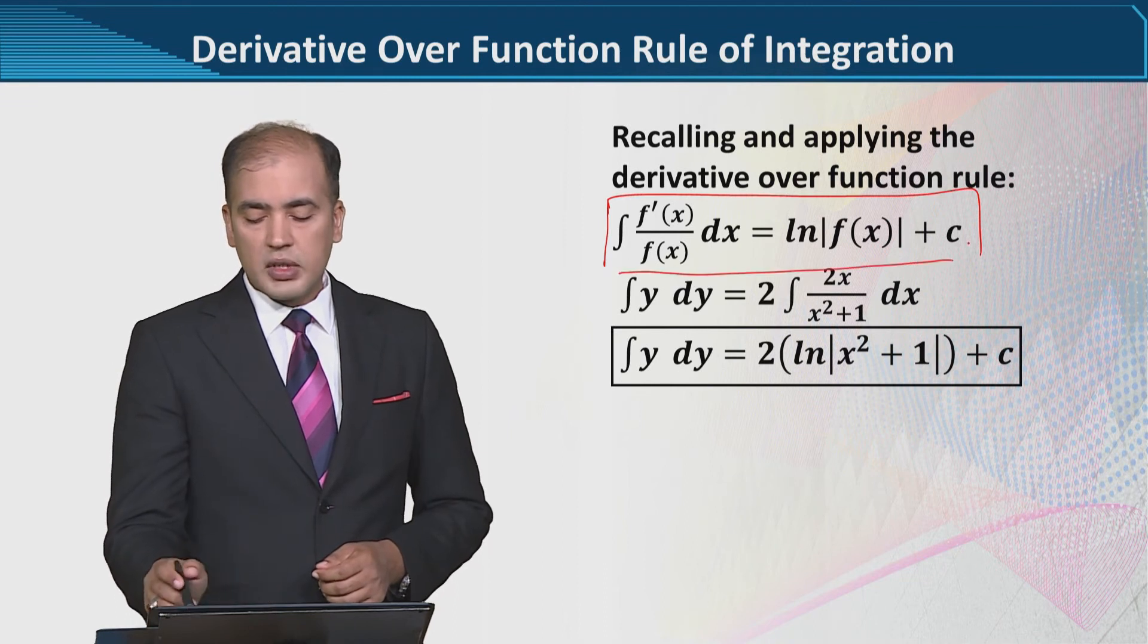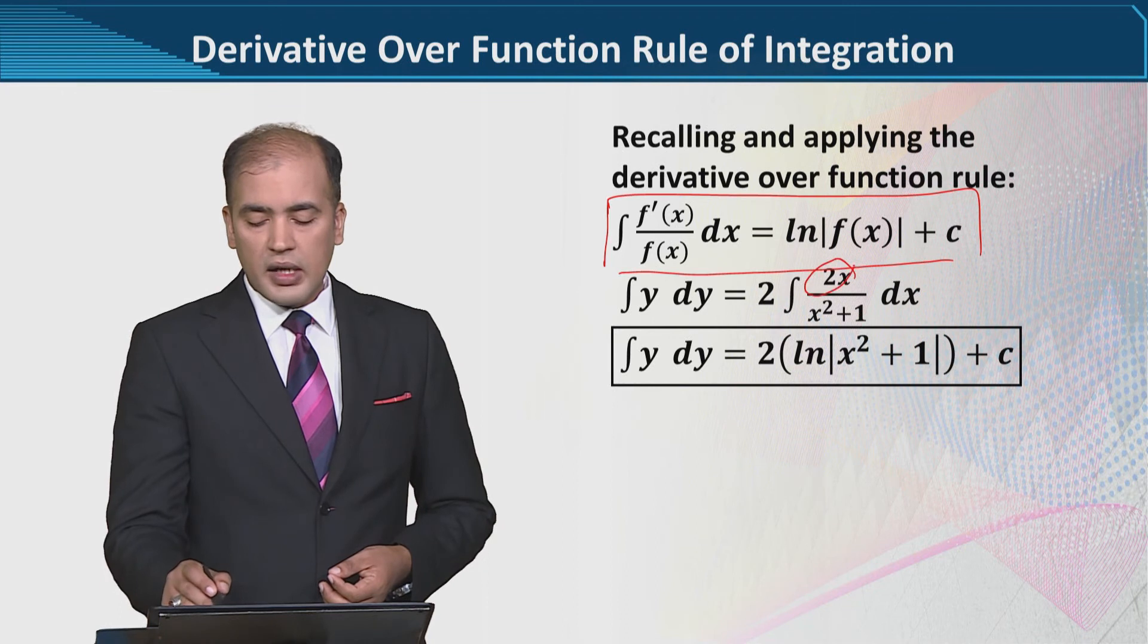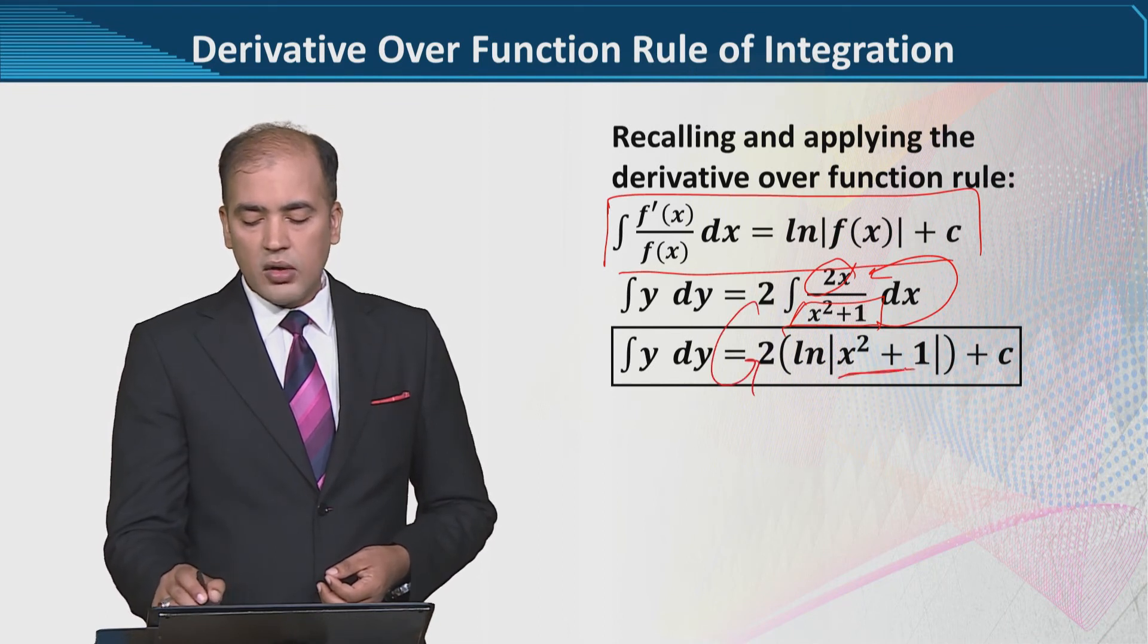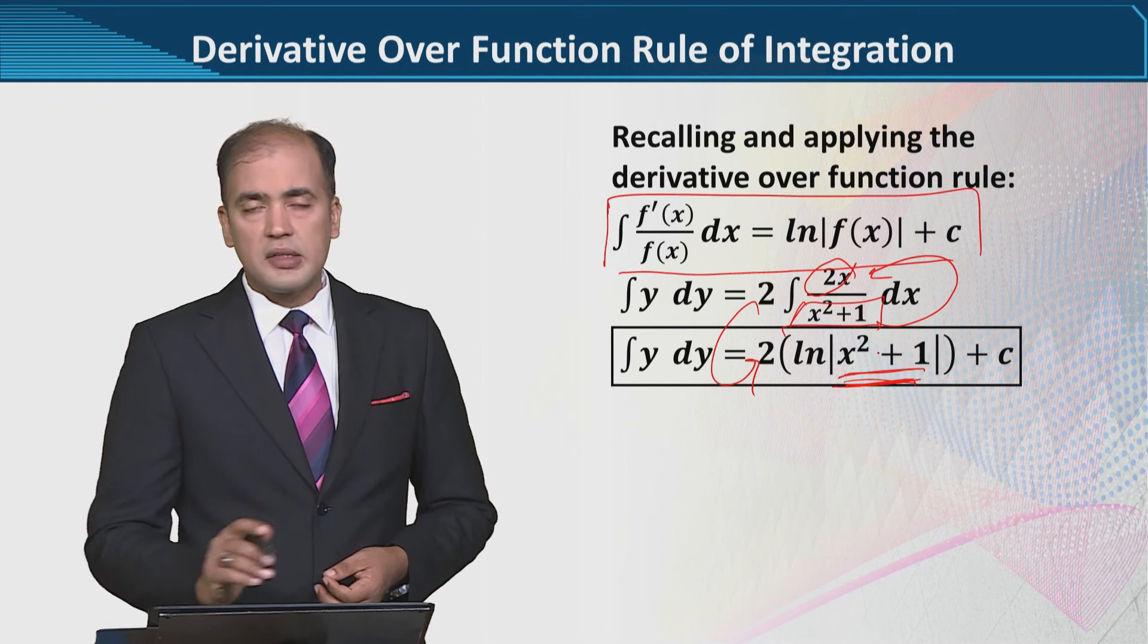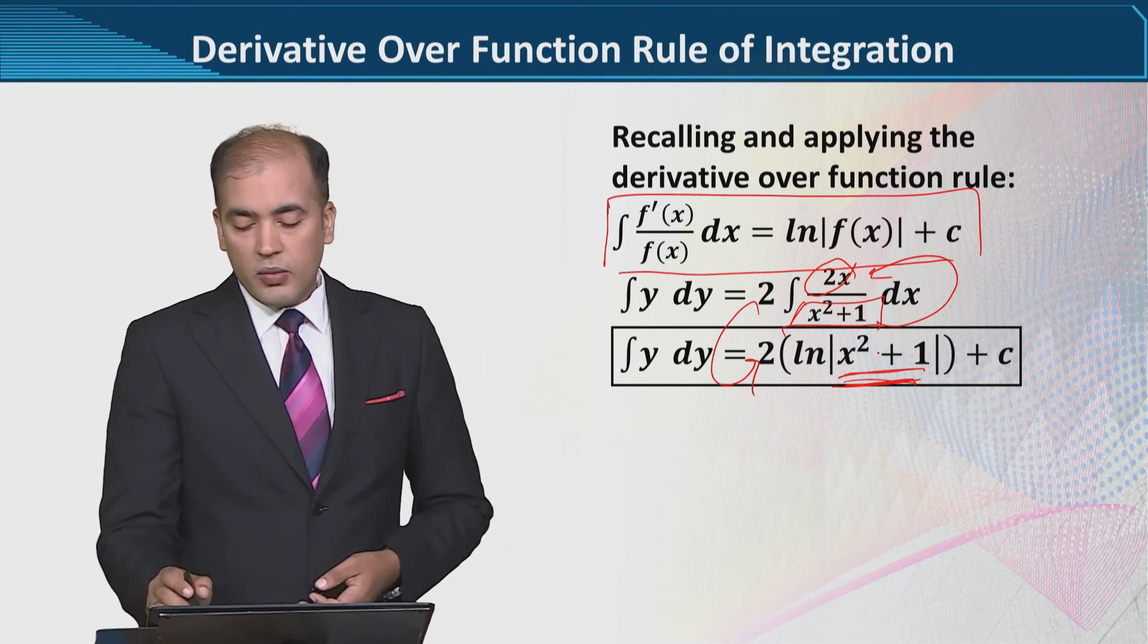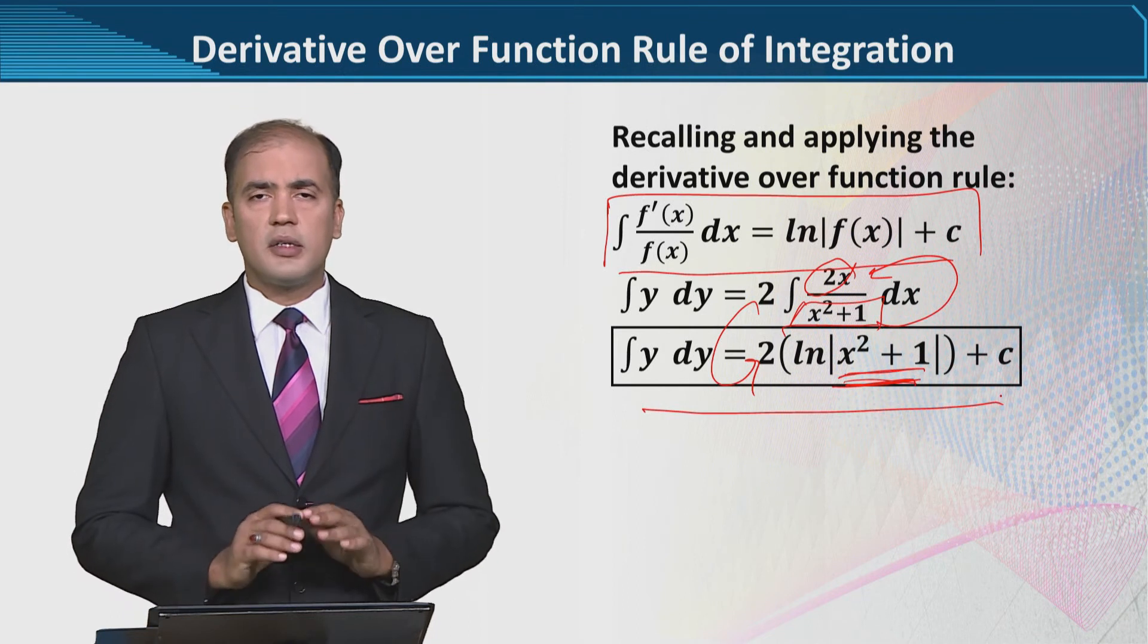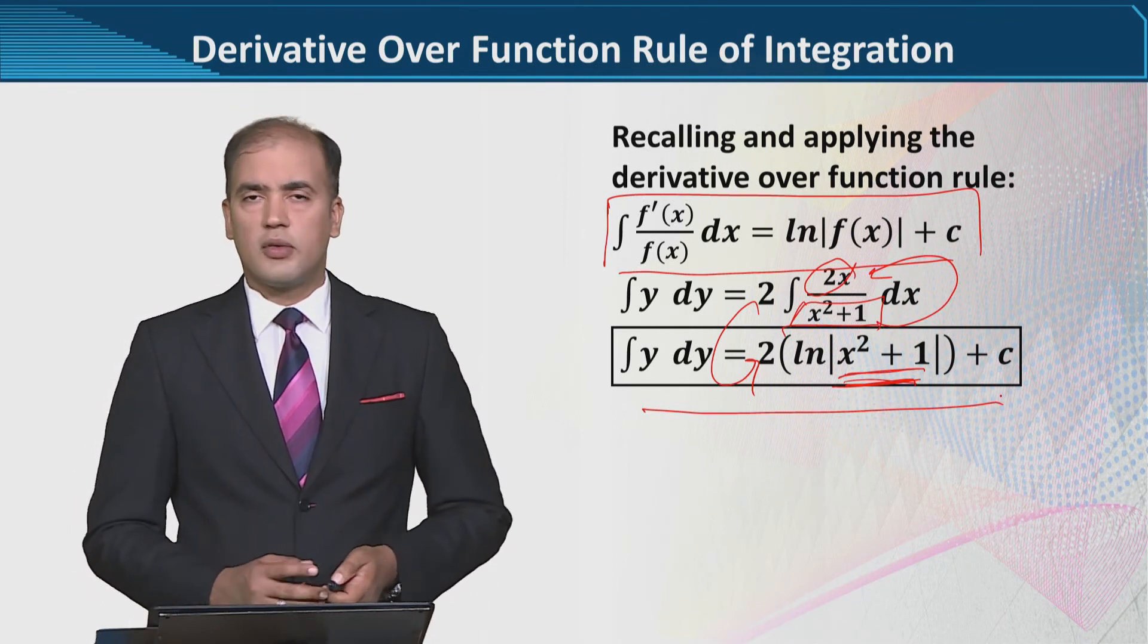So you're seeing that we've explained this symbolically here. The next step would be this thing. We had the derivative over function rule—we're writing it here once. And here we're seeing that 2x is the exact derivative of x²+1, so we'll write the 2 as is, and its integration will be the natural log of the function. The natural log has come, and the function we have is x²+1, and we've written plus c. So we have this function's derivative where we applied the derivative over function rule.